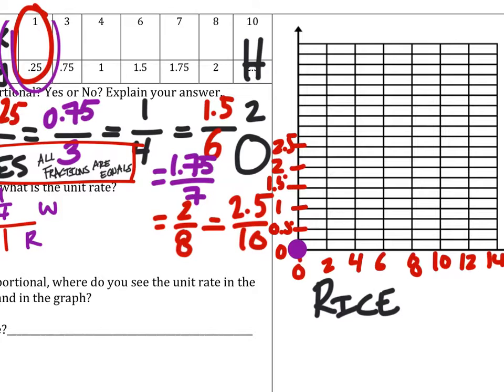Now we need to put the points on the graph. So we have a point: if you have zero cups of rice, you have zero cups of H2O. If you have one cup of rice, you have 0.25 cups of H2O. The next up is three, so three would be right here and 0.75 right here. Four and 1. Six and 1.5. Seven, which would be right here, and 1.75 right here. Eight and two. And finally, ten and 2.5.